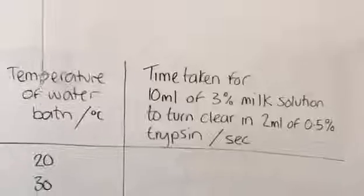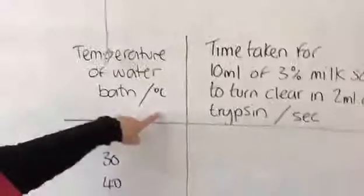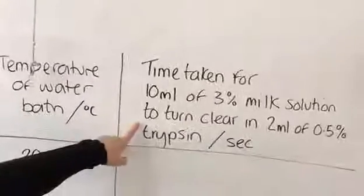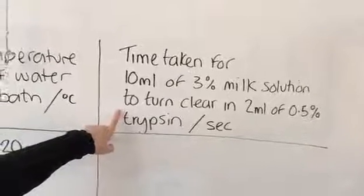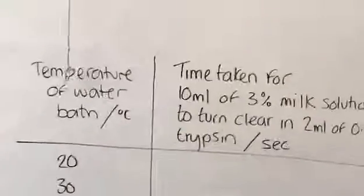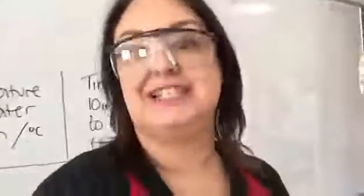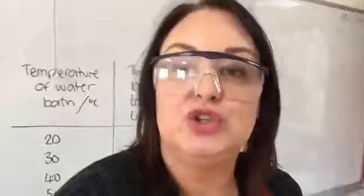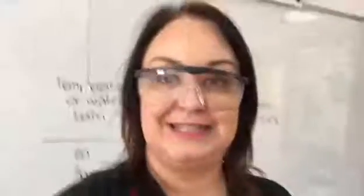I've drawn my table on the board with column headings. Remember, column headings can't be too long but they can very easily be too short — I've kept my units in the column heading and not in the actual column itself. I've got a full title. What I have missed out is the three repeats that I'm doing for each temperature. Repeats make your experiment more reliable because you can identify anomalies, discard them, and they won't affect your mean — giving you a much better graph and a better set of anticipated results.